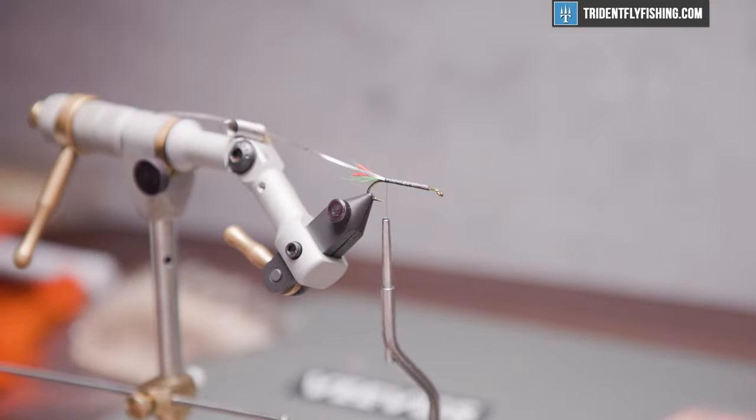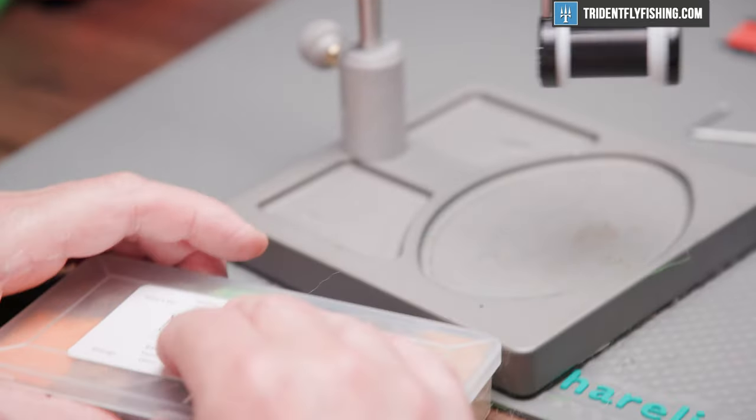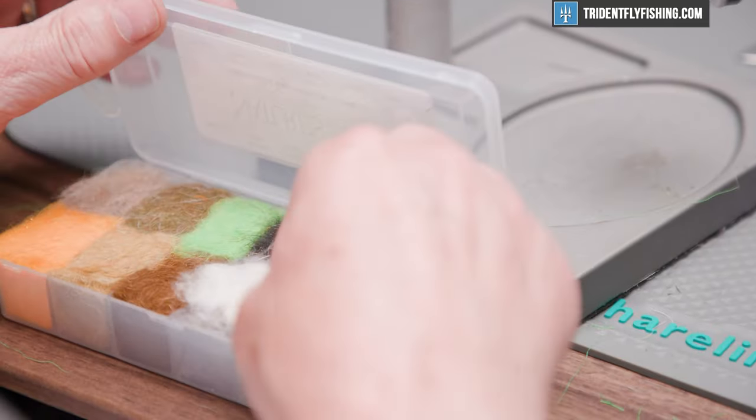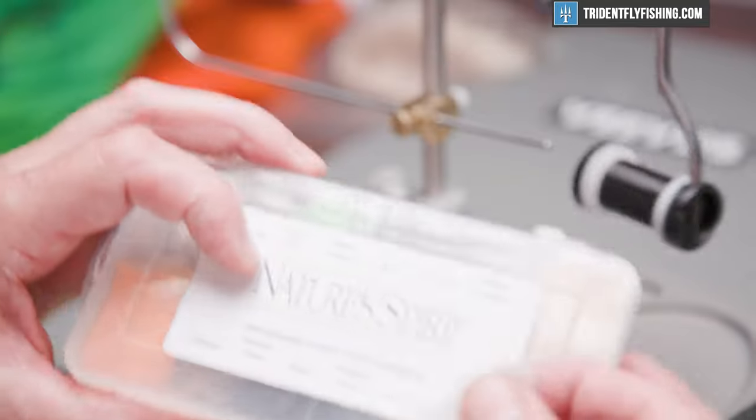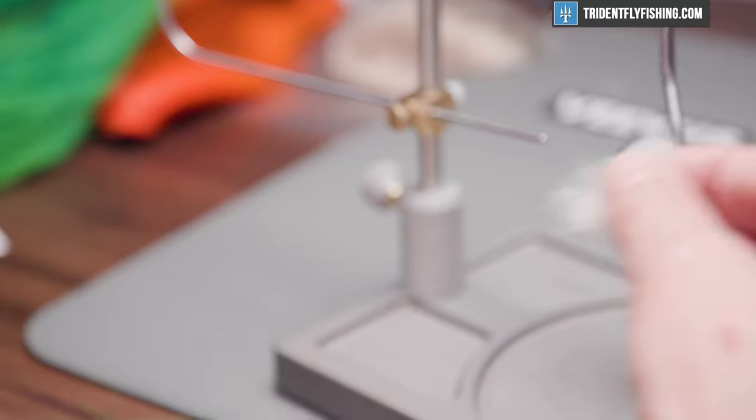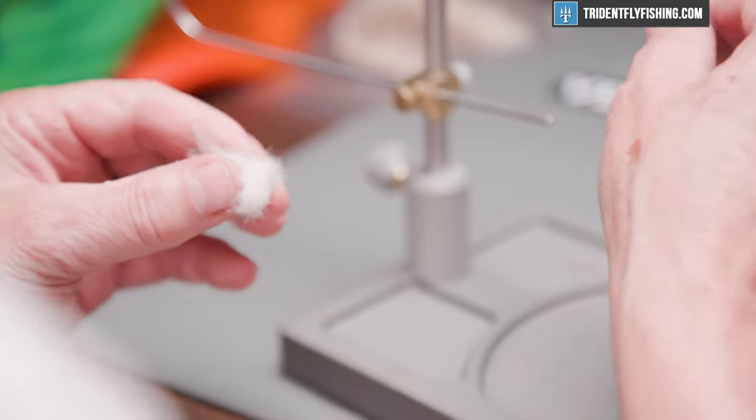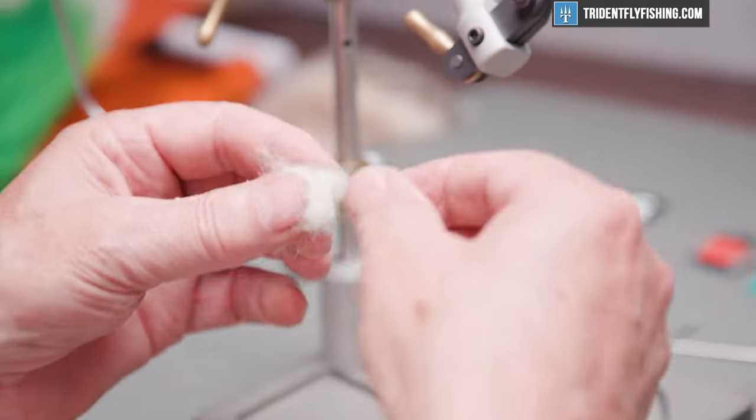The next material we're going to tie in is for the body. The original recipe just called for cream colored fur. What I have here is Nature Spirit Snowshoe Rabbit foot dubbing in cream. This takes a little bit of time because it's a long shanked hook.